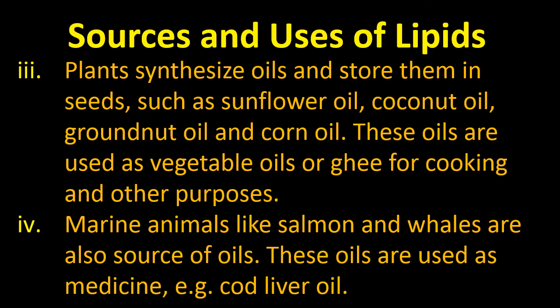Plants and marine organisms are also sources of lipids. Plants synthesize oils and store them in seeds — such as sunflower oil, coconut oil, groundnut oil, and corn oil. These oils are used as vegetable oils or ghee for cooking and other purposes. Marine animals like salmon and whales are also a source of oils used as medicine, for example cod liver oil.